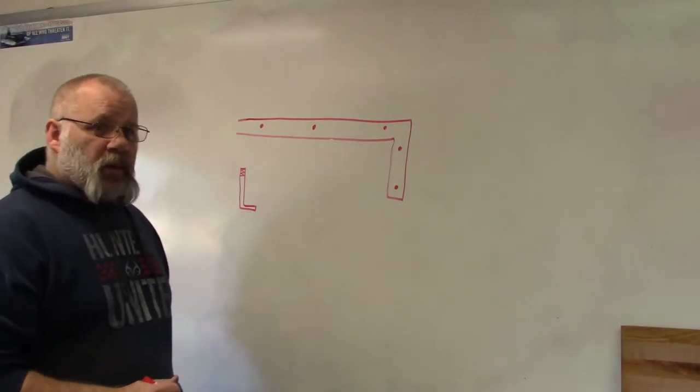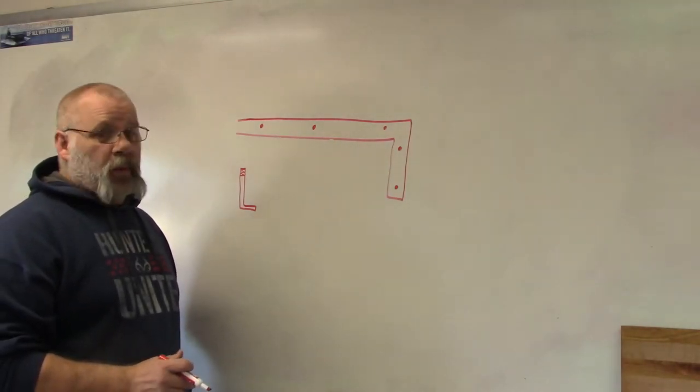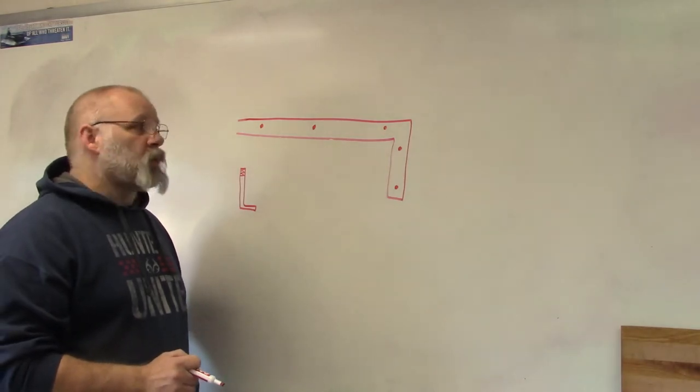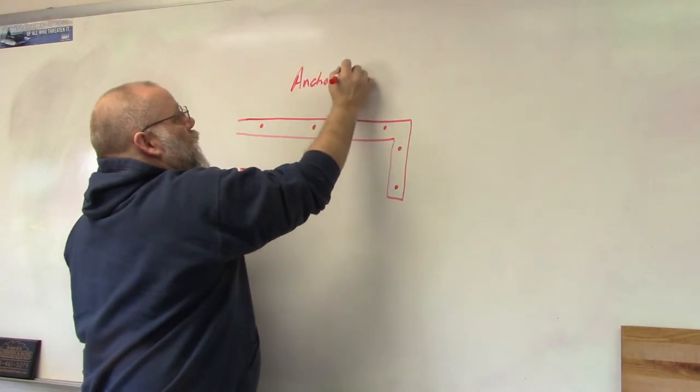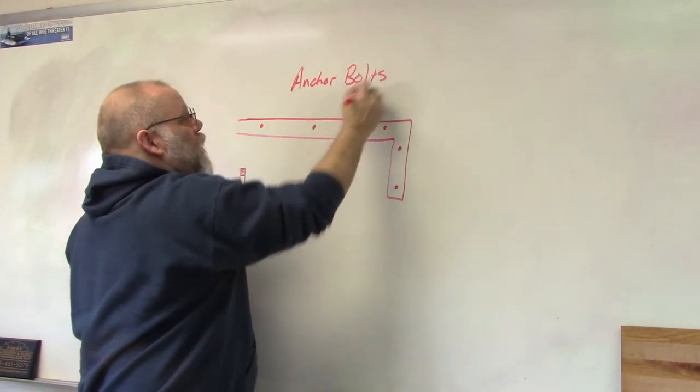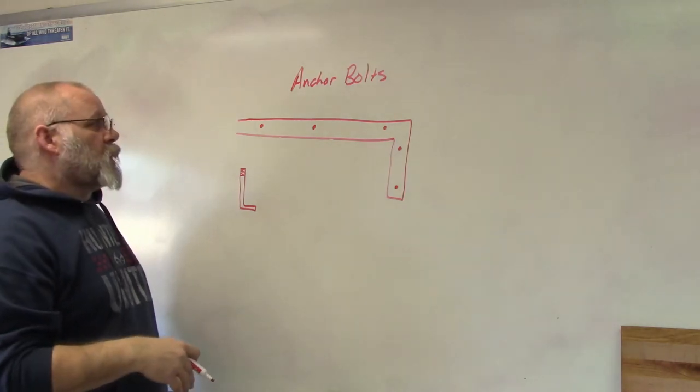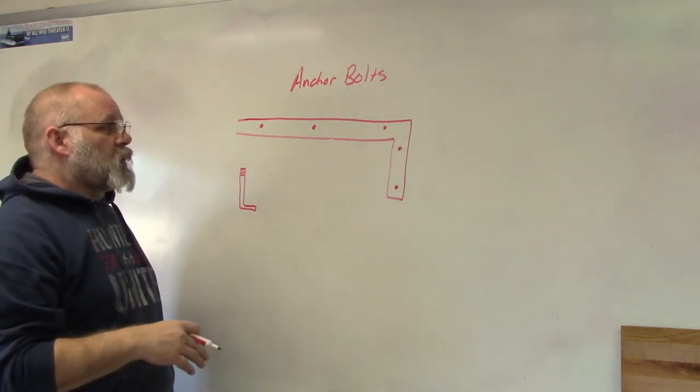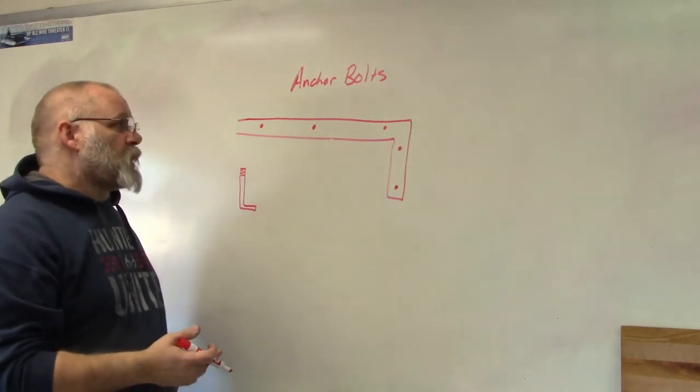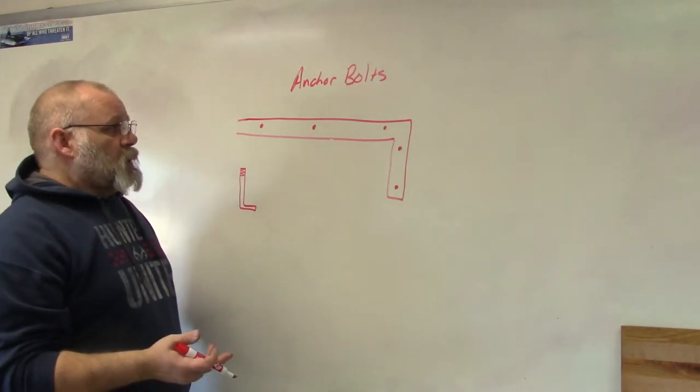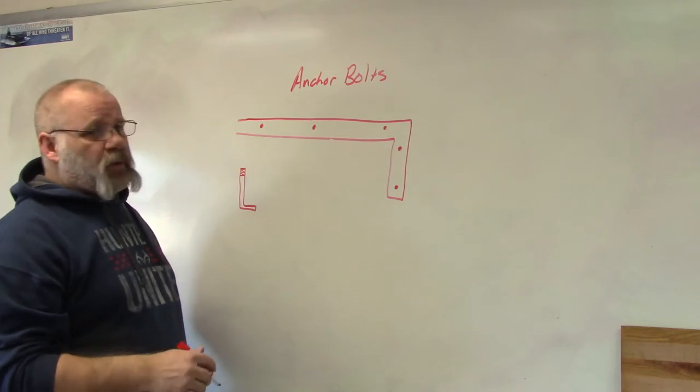In this video, I'm going to tell you where to put anchor bolts. Anchor bolts are used to fasten the sill plate, or some people call it a mud sill, to the concrete or block foundation or a slab. You put them in a slab also.